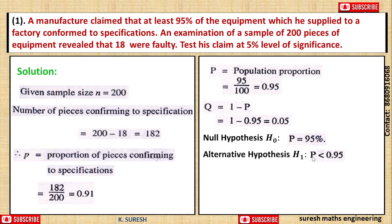Alternative hypothesis: P less than 0.95.